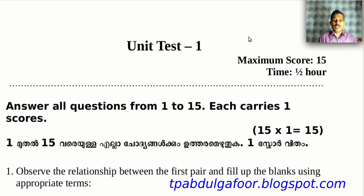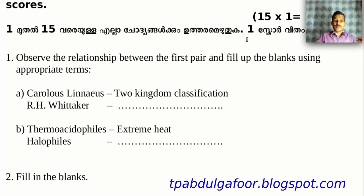15 into one equals 15 score. Each one score is one score, so the total is 15. First question: study the relationship between the first pair and fill in the blanks using appropriate terms.